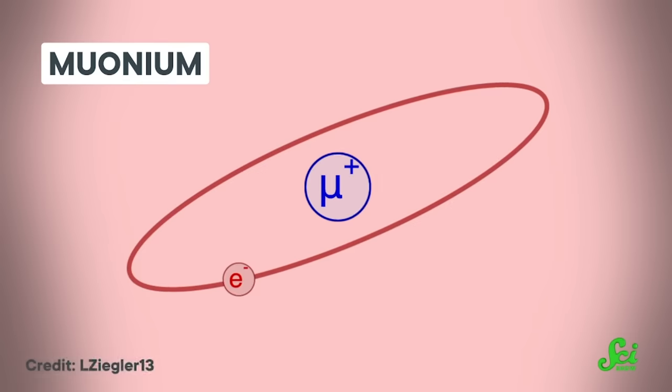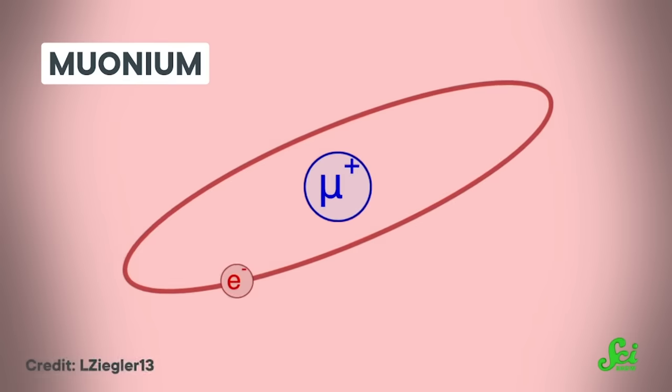But it turns out that there is an atom out there that's even simpler than hydrogen. It is called muonium, and it may help researchers understand the deepest mysteries of physics.